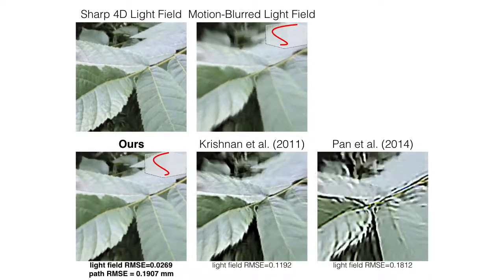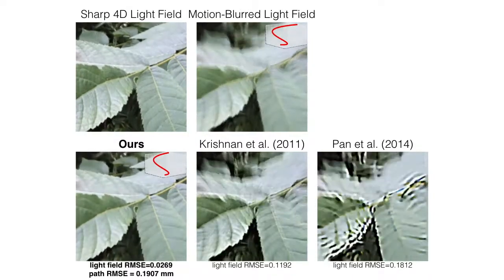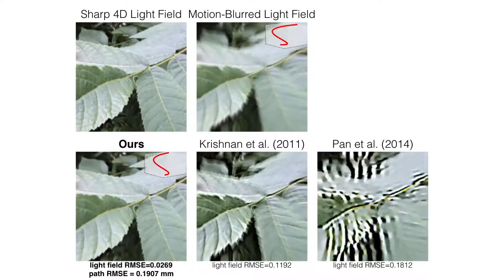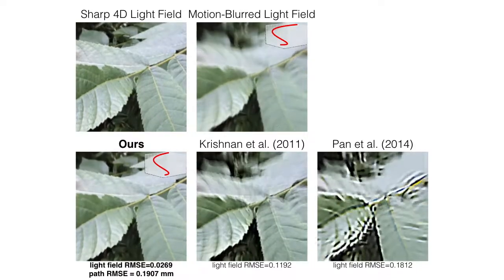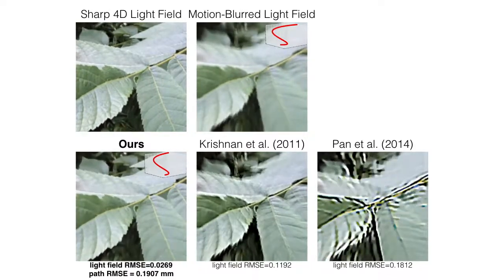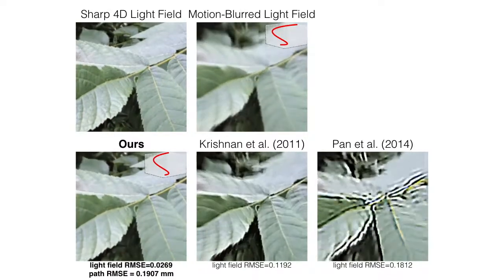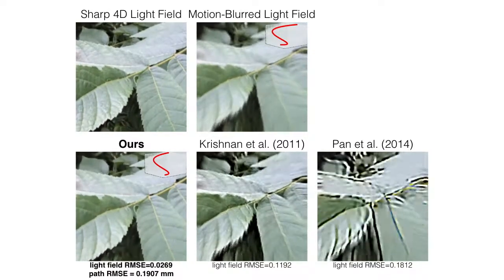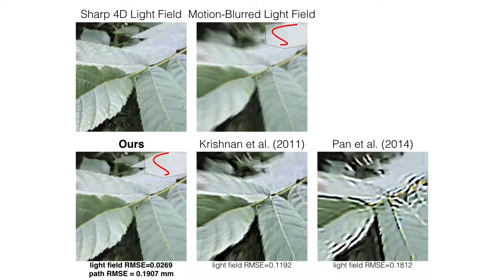Furthermore, they are not designed to take advantage of the light field structure and do not estimate a 3D camera motion path, so their results are inconsistent between sub-aperture images.